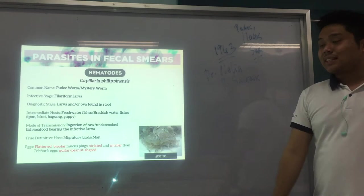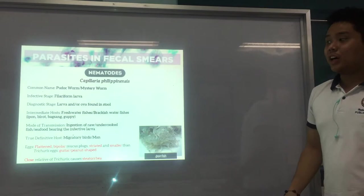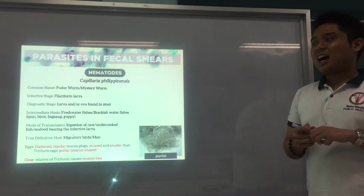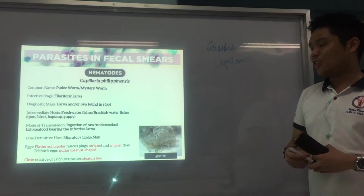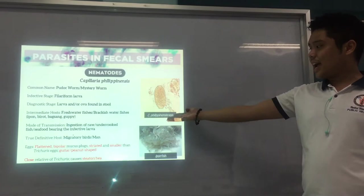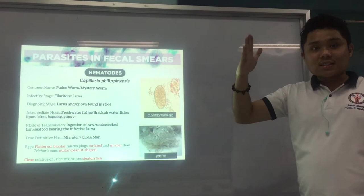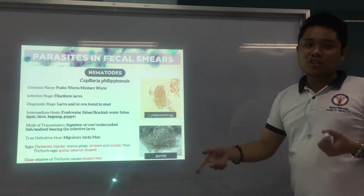The egg shape is guitar or peanut-shaped. It is a close relative of Trichuris and causes steatorrhea — increased fats in the stool — similar to Giardia. The egg of Capillaria philippinensis looks similar to Trichuris eggs, but is less protruded at the bipolar plugs and appears much wider, like a guitar or peanut shape.